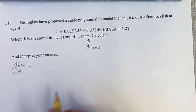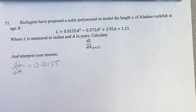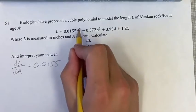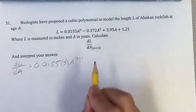Going with this first term right here, you take the coefficient 0.0155, you bring that out in front, multiply it by your exponent, and then you have your new exponent, which is the old one minus one.